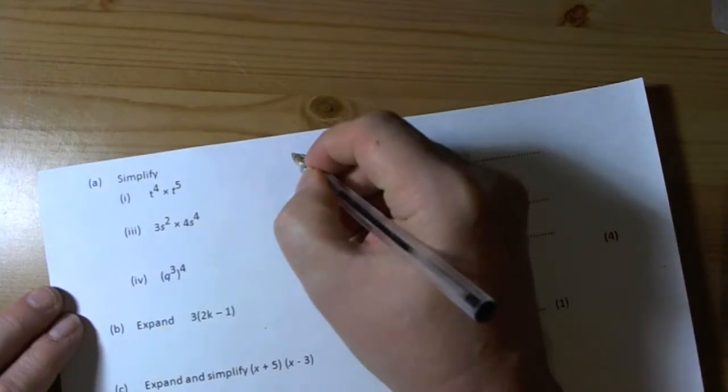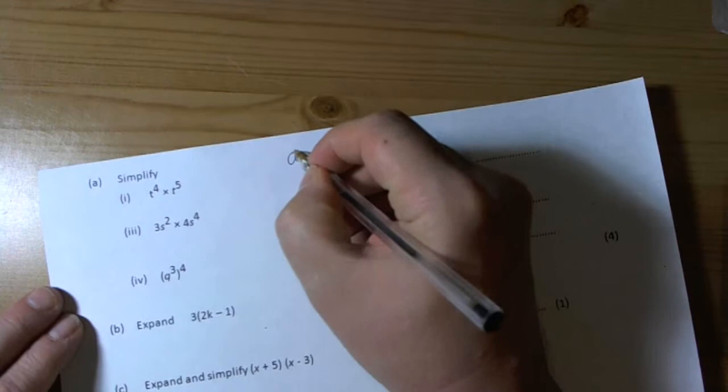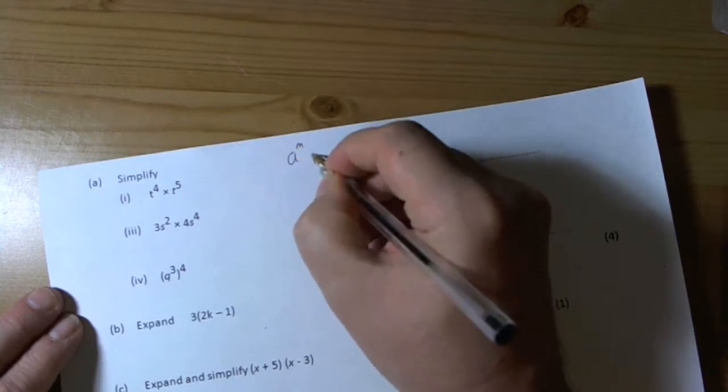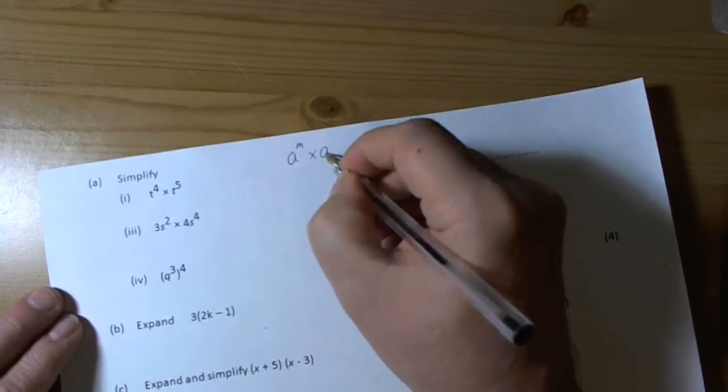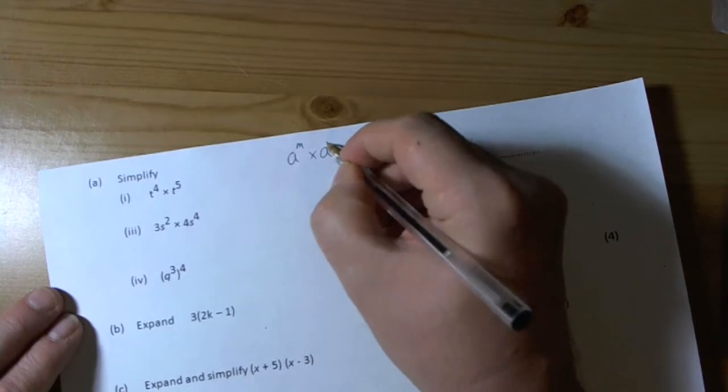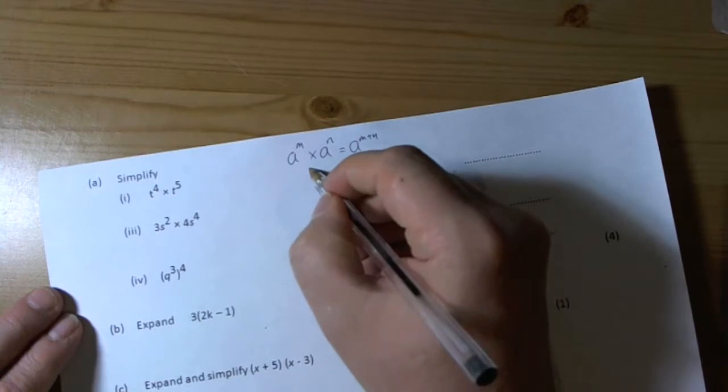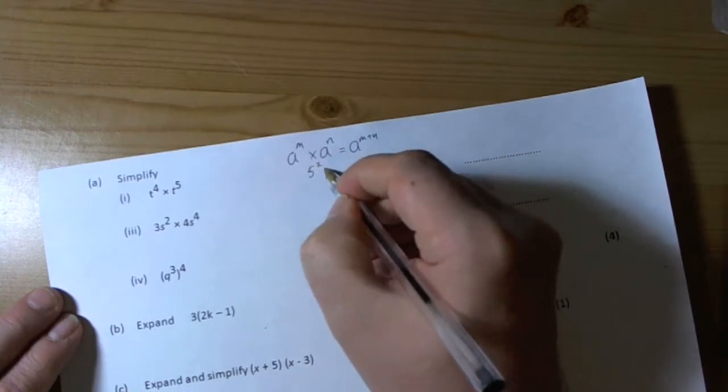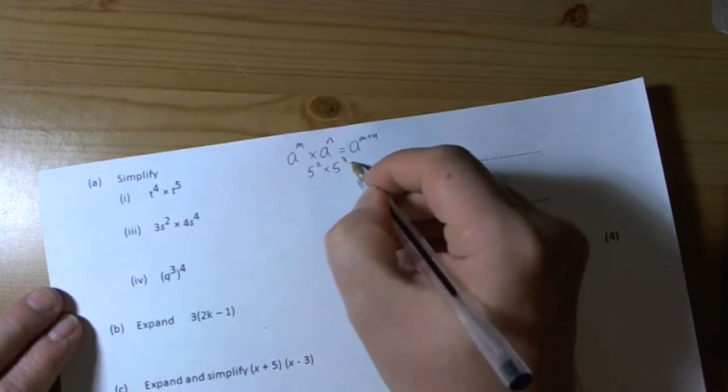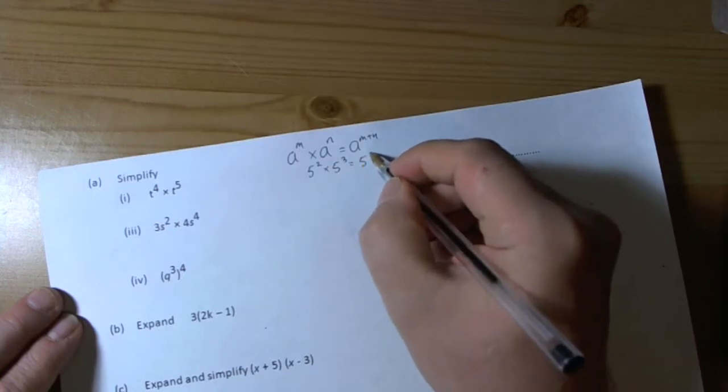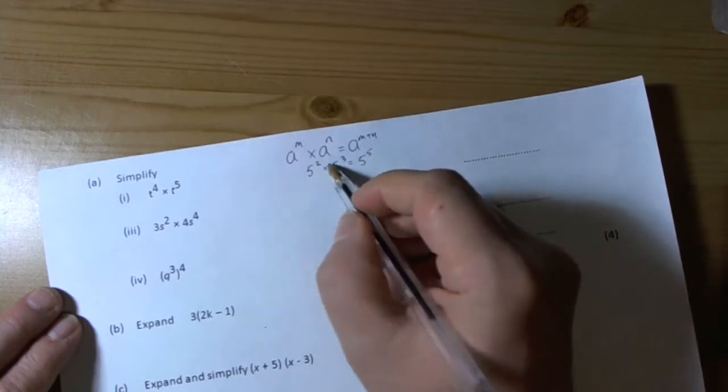If we take any value to the power of a number m, times the same base number to the power of n, then the rule says that we can add two powers. So if I had something like 5 squared times 5 cubed, then the rule says it would be the same as 5 to the power of 5, because 2 plus 3 is 5.